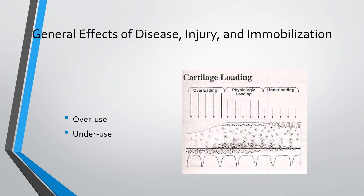With cartilage overloading, the protective tangential layer of collagen fibers is lost, and the collagen wears away without protection against shear forces. With insufficient loading, there is no nutrition or oxygenation for the cells within the tissue — those cells die, and both the collagen and glycosaminoglycans eventually deteriorate as they are no longer maintained by the chondrocytes and fibrocytes needed to keep those tissues healthy.